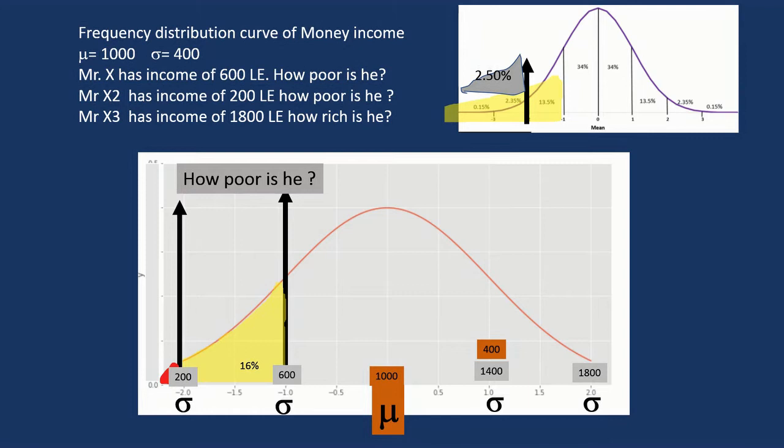Mr. X3 has an income of 1,800. How rich is he? So it's two standard deviations above the mean, and we know this area covers 97.5% of the population.